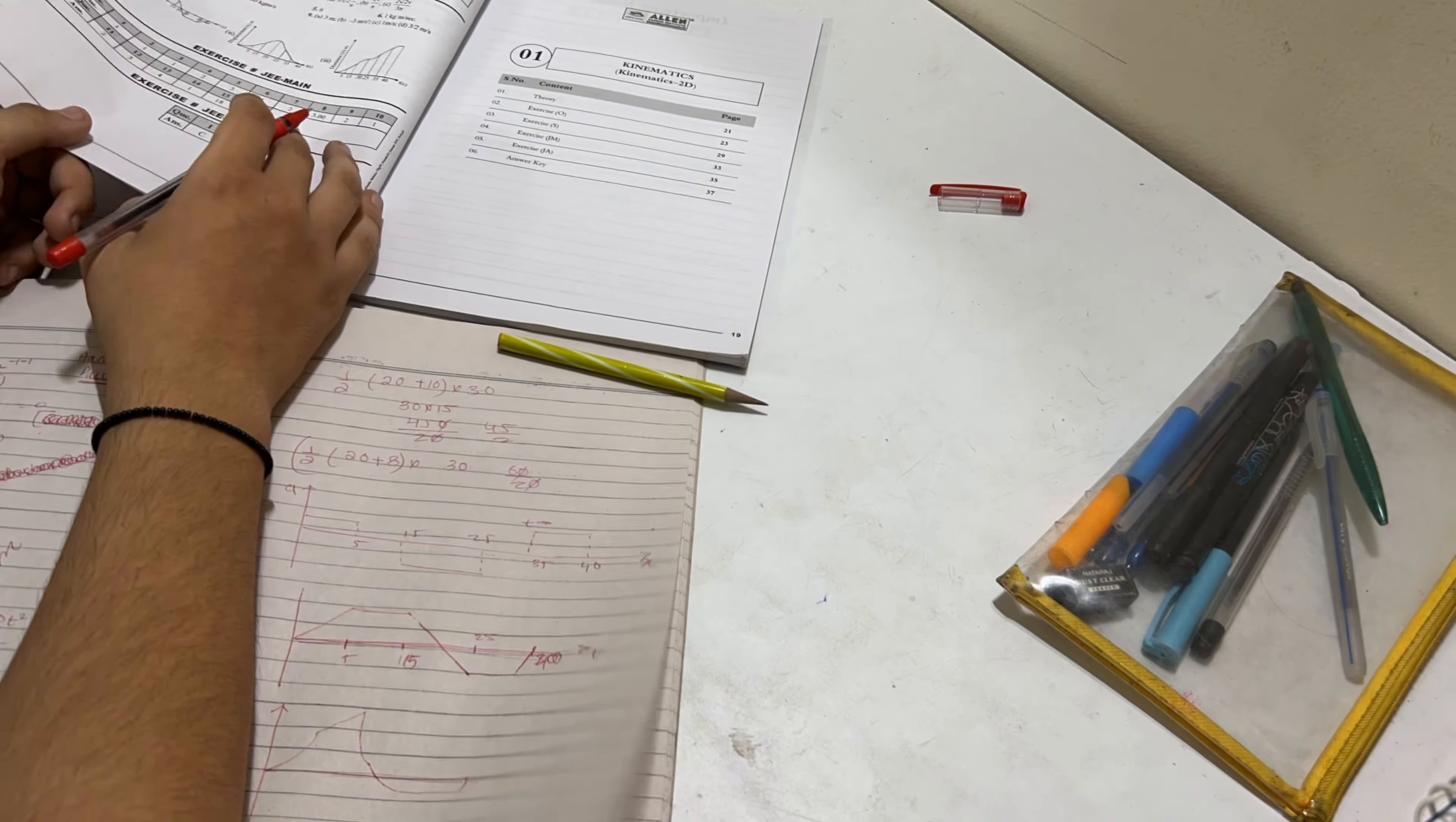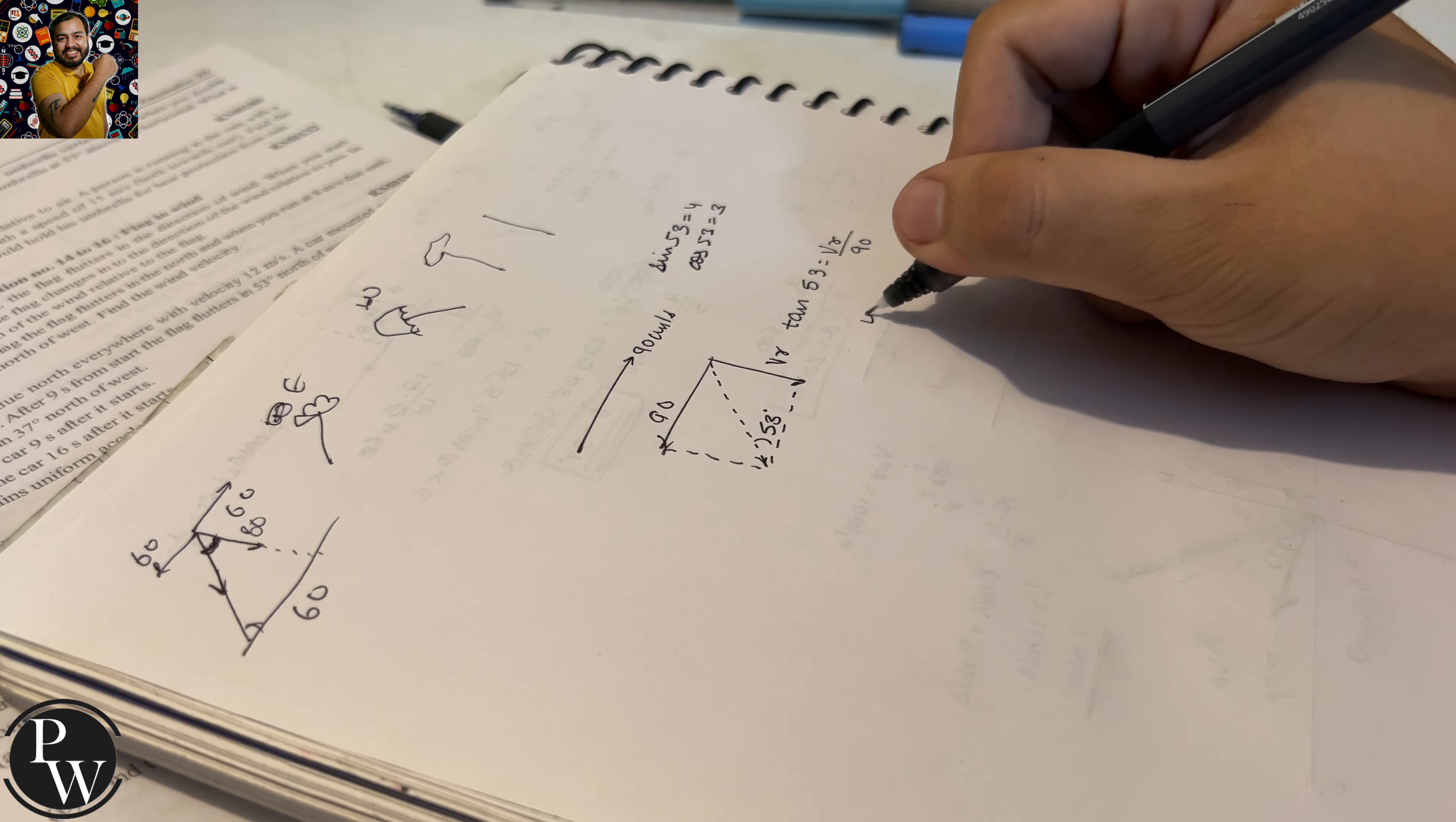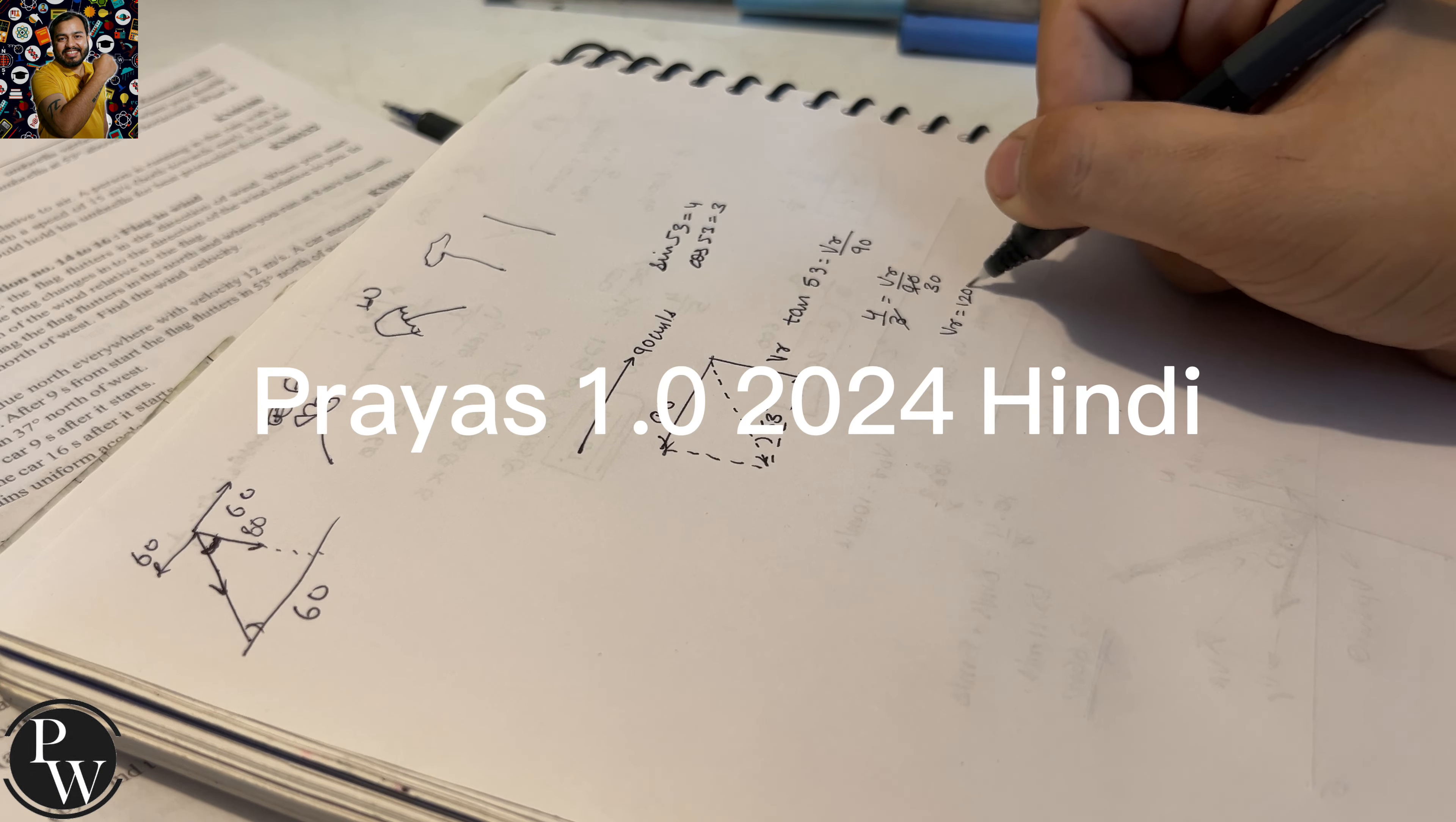Lakshya JEE 2.0 2025 for 4500, Prayas JEE 2.0 2025 for 4199, Arjuna JEE Hindi 2025 for 3000, Lakshya JEE Hindi 2025 for 3000, Prayas JEE Hindi 2025 for 3000. PW is giving you free access to Arjuna 1.0 2024 and Arjuna 2.0 2024 when you buy Lakshya JEE 2025. You will get Prayas 1.0 2024 Hindi if you buy Lakshya JEE Hindi 2025.